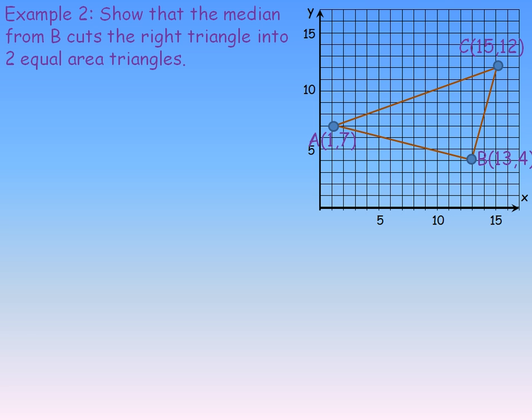And so flipping over to the next example on the last page here, we're asked to show that the median from B, and I didn't have to choose B, I could have chosen A or C, it wouldn't be a problem, cuts the right triangle into two equal area triangles.